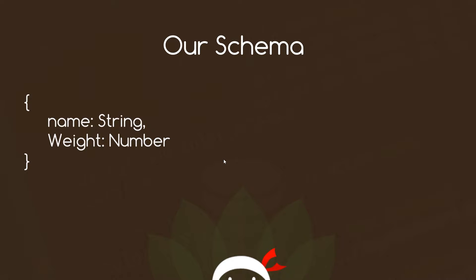So what is an update operator? An update operator is just something that can help us update our fields in certain ways. For example, we can have a rename update operator which renames a particular field for us, or we can have an increment update operator which will increment a particular field for us. That's the one we're going to be looking at in this tutorial — the increment operator.